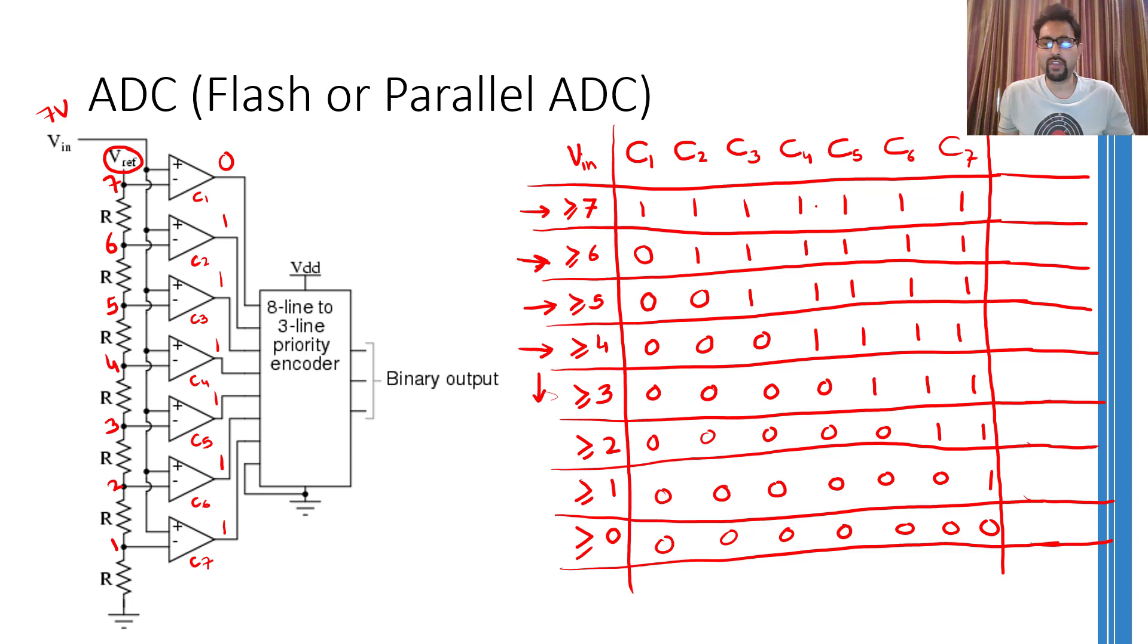So at the end, the job of the priority encoder will be to encode these levels into binary output. We can use 3 bits to encode these 8 levels. So if I am using 3 bits, for example B1, B2, and B3, I can encode the 8th level or the largest level using 1, 1, 1.